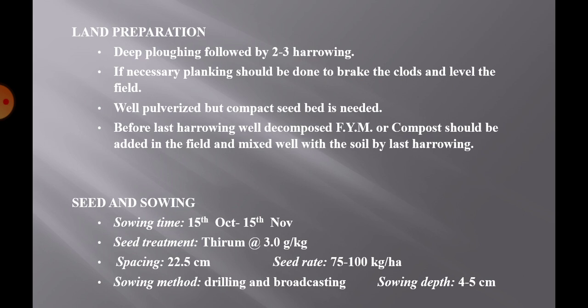Seed and sowing: 15 October to 15 November is the best suitable sowing time. For seed treatment, thiram at the rate of 3 grams per kg is used to control seed-borne diseases. Spacing of 22.5 cm row to row is maintained as it is a close-growing crop. Seed rate is 75 to 100 kg per hectare. Sowing method is by drilling or broadcasting and 4 to 5 cm sowing depth should be maintained.